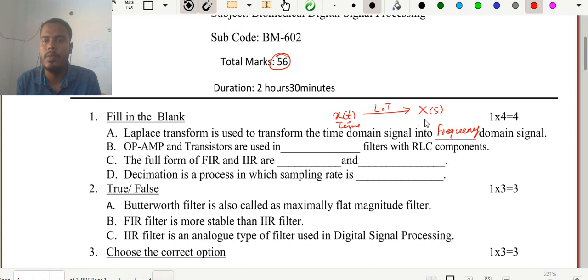Second one is talking about the op-amp and transistors are used in filters with RLC components. This RLC component is basically resistor, inductor, and capacitors. Since we are using op-amp, which is operational amplifier, and transistor, these two components are considered to be active elements. So when you use active components in a filter, the filter will be called as active filters. Remember this, these two filters are active filters.